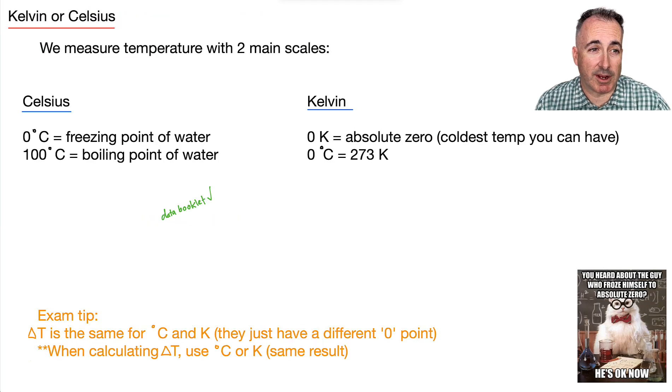So let's talk about temperature now. We have temperature in Kelvin or Celsius. We use two main scales. We actually don't use Fahrenheit. That's for Americans. But we actually use Celsius. And Celsius is defined this way. So 0 degrees Celsius is the freezing point of water, and 100 degrees Celsius is the boiling point of water.